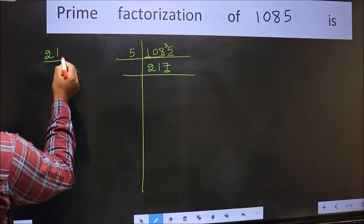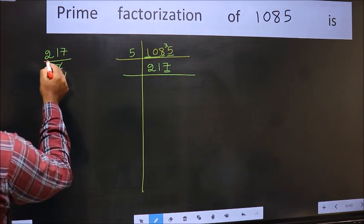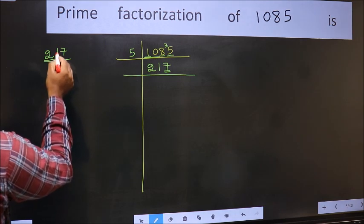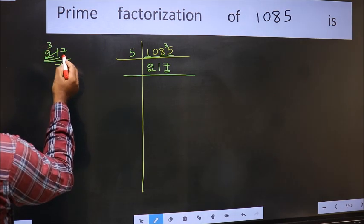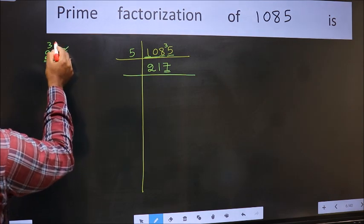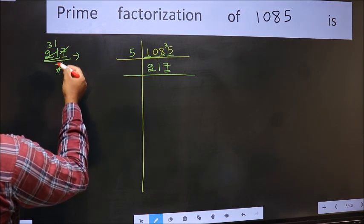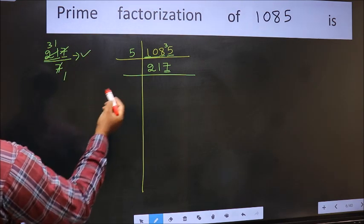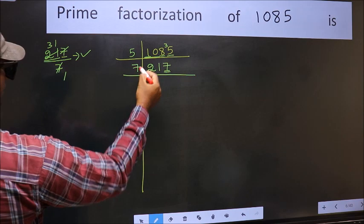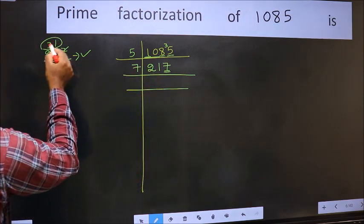Here. 217 by 7. When do we get 21 in 7 table? 7 times 3 is 21. The other number 7. When do we get 7 in 7 table? 7 times 1 is 7. No number has been left here. Therefore this is divisible by 7. So take 7 here, and here we write this number 31.